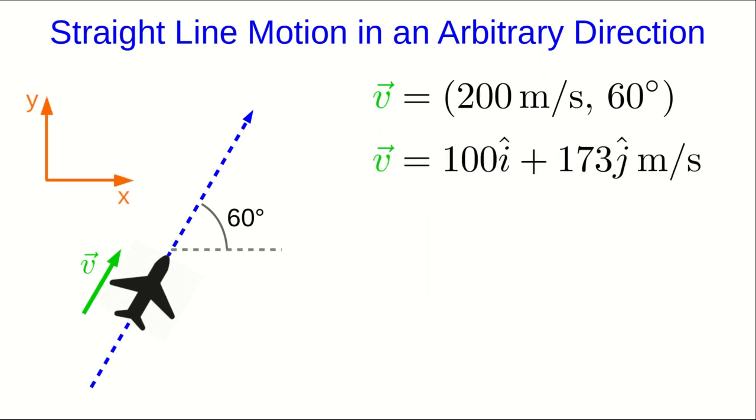Now it may not be obvious to you why we wanted V in component form instead of magnitude direction form. The quick answer is that in a moment, we're going to need to add vectors. And we only know how to add vectors when they're in component form.